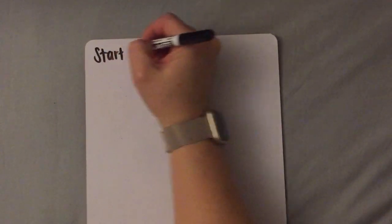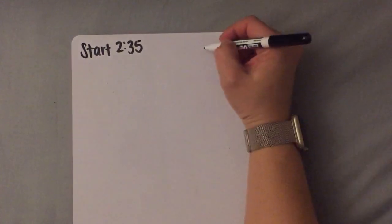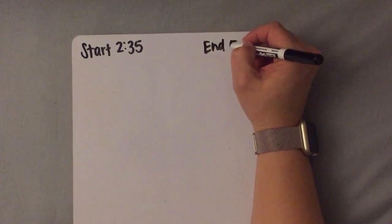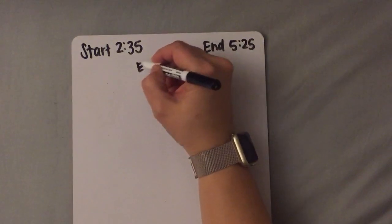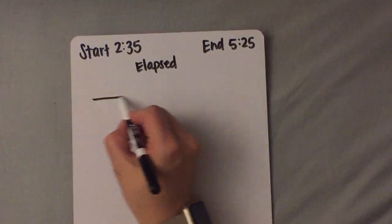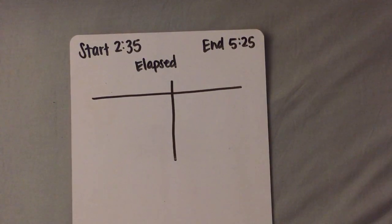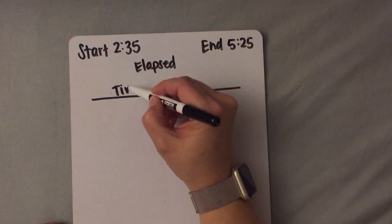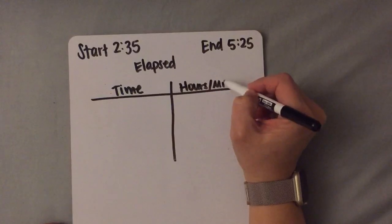So for this problem, the start time that I have is 2:35. The end time is 5:25. I'm looking for the elapsed time. So I'm going to go ahead and start this t-chart just the way you would any t-chart — the big T. I'm going to label this side with time and this side with hours and minutes.